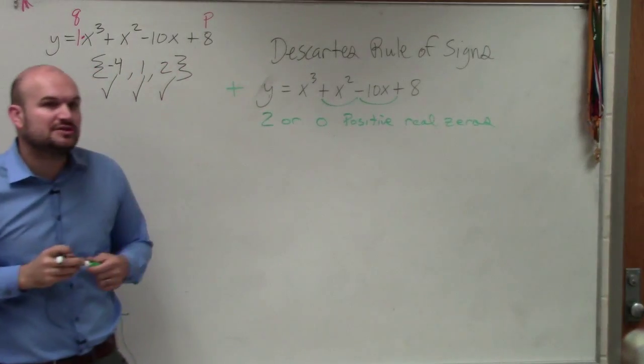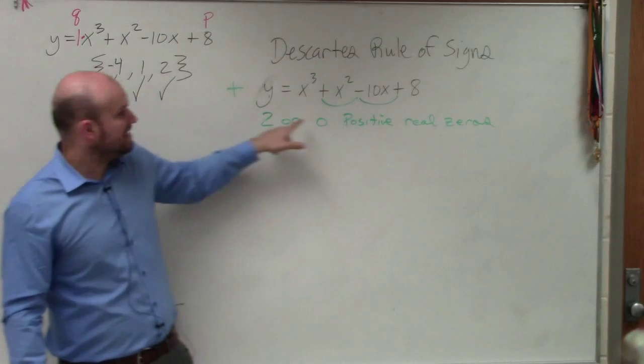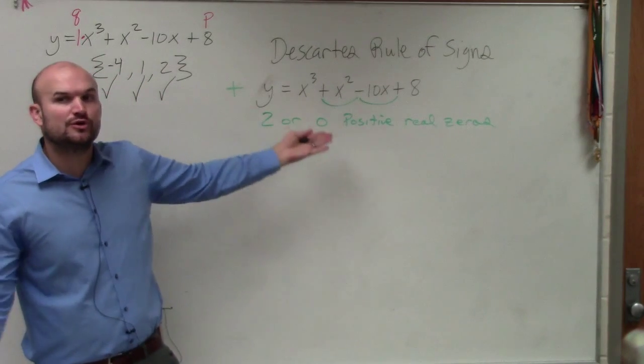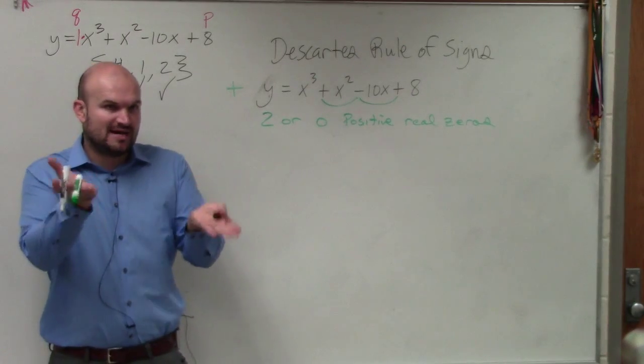So to find the positive real zeros, all you do is take the polynomial and count the sign changes. Then you subtract an even number from how many sign changes are. Two is an even number. So two minus two is zero. So you have two possibilities.